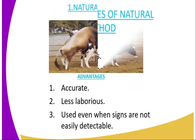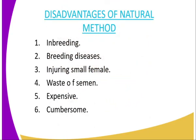Then we have the disadvantages of the natural mating method. The first one is it will encourage inbreeding. During inbreeding, you might pass undesirable characteristics from the parent to the offspring.